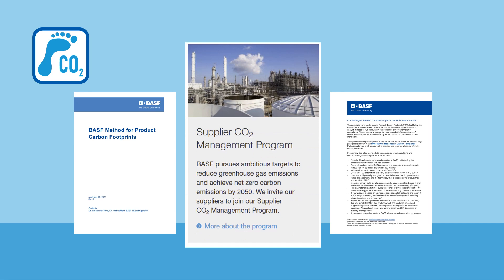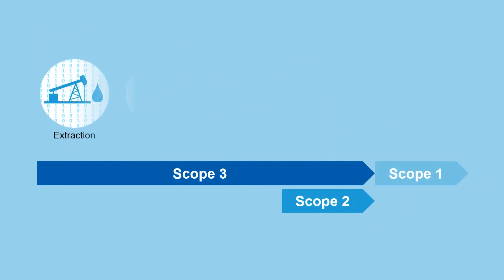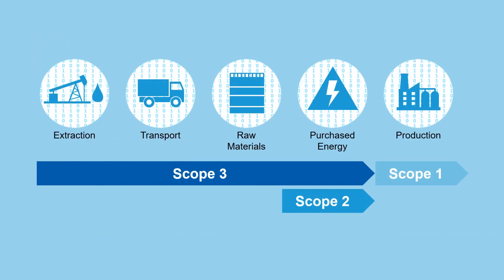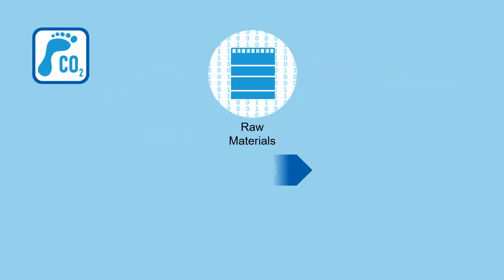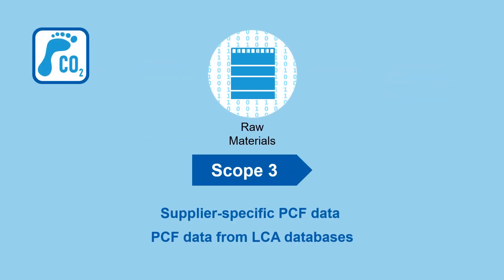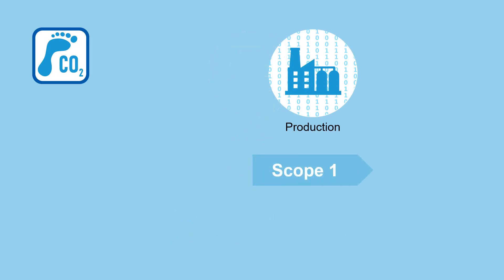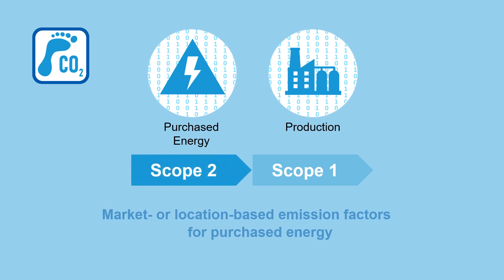BASF has compiled a corresponding set of rules and published them on their website. In principle, the PCF calculation should take into account the following points: cover all product-related GHG emissions and removals from cradle to gate. For raw materials and utilities — scope 3 — consider supplier-specific PCF data wherever possible, or PCF data from LCA databases. Consider primary data for all processes under your ownership — scope 1 — and preferably market or location-based emission factors for purchased energy — scope 2.